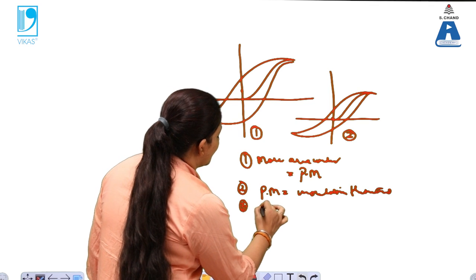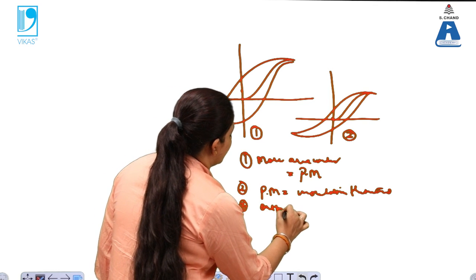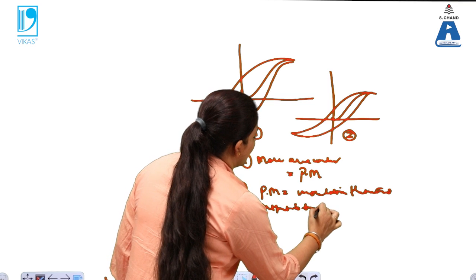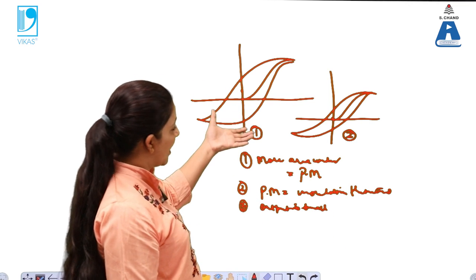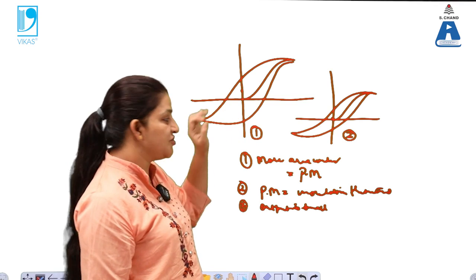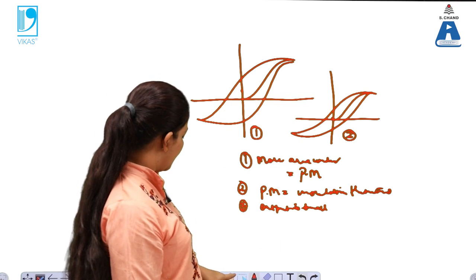If there is more loss in the material, that means the output will be very small. So these are the properties of having BH curve having a large area.